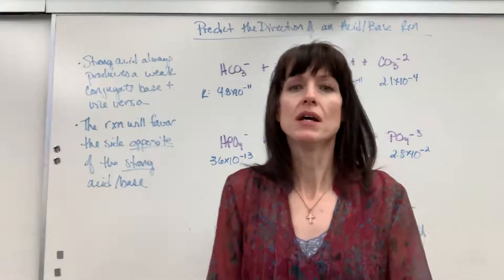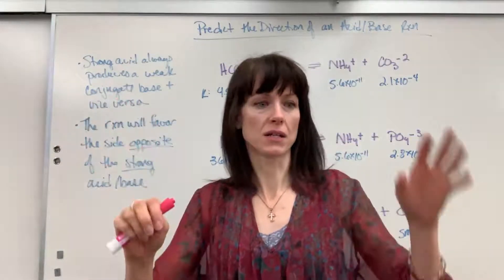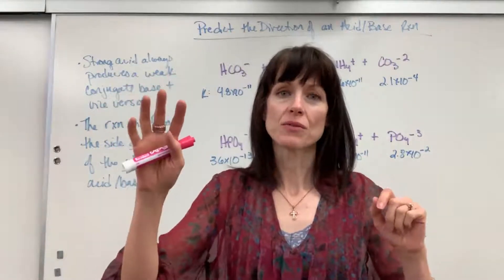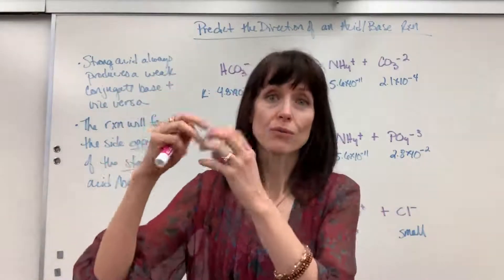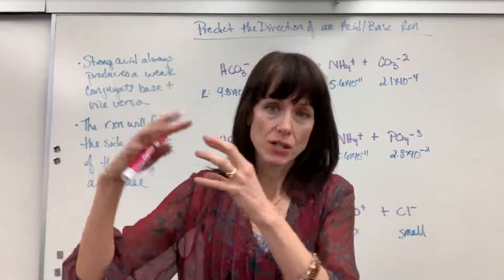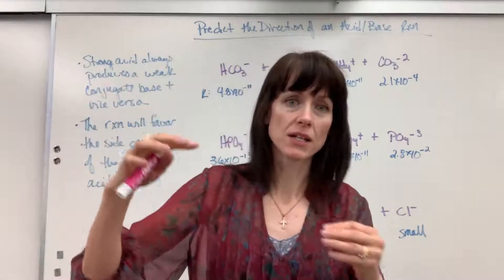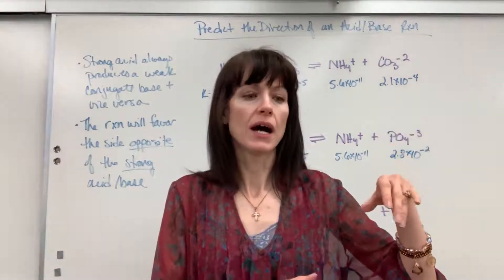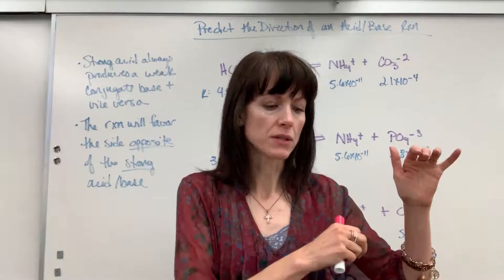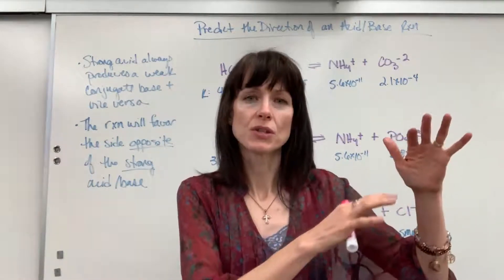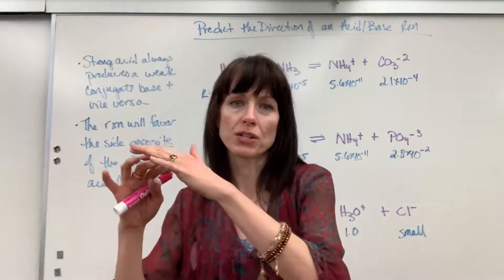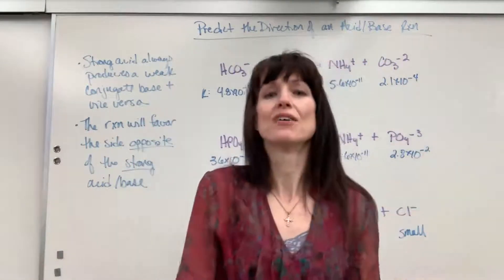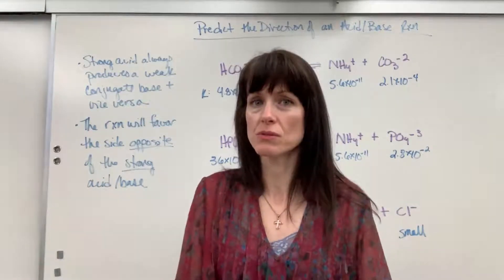Here's how to think about it. If I have a strong acid on the reactant side and a strong base on the product side, this reactant, because it's strong, has a greater ability to react and ionize. So it reacts and creates more products. Whereas the acid on the product side doesn't go in the reverse direction as much, so you end up with more products — opposite of whatever is strong.